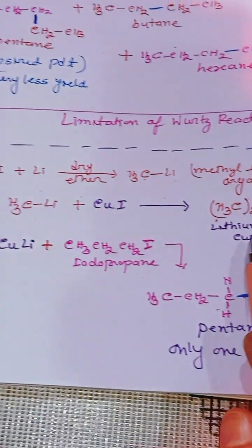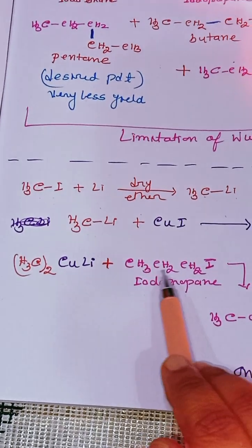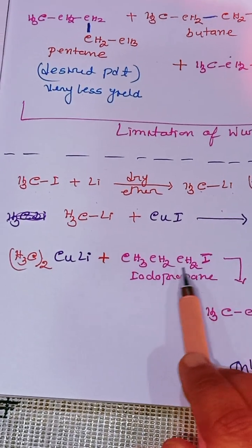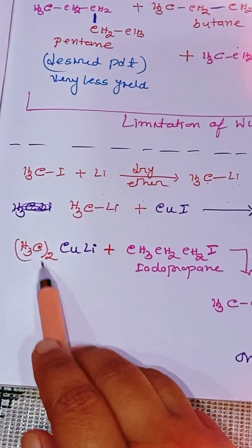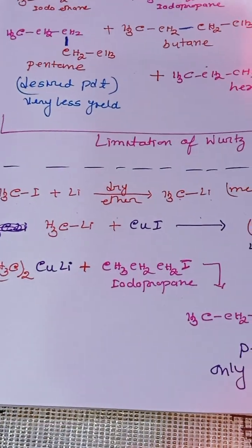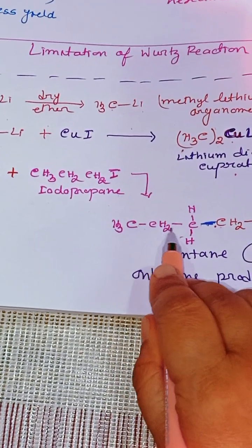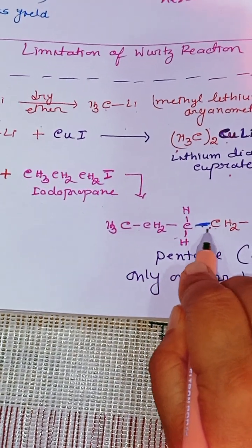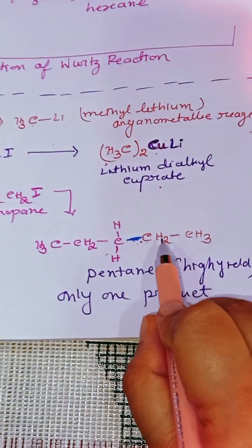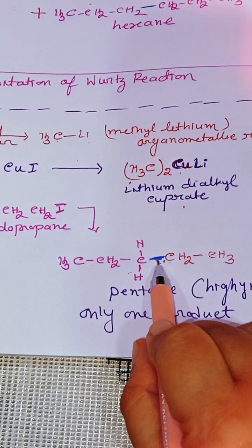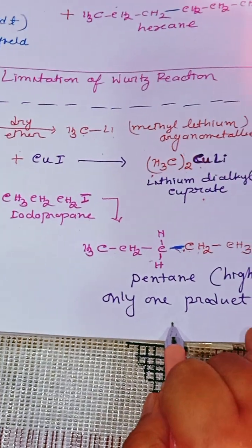Now this lithium dialkyl cuprate reacts with another alkyl halide, here we are taking CH3-CH2-CH2-I, that is iodopropane. This propyl group and the two methyl groups will combine to give pentane. Here is the propyl group CH3-CH2-CH2, and new bond formation between the carbons. Two methyls become ethyl, so this blue bond is the new carbon-carbon bond and we get pentane.